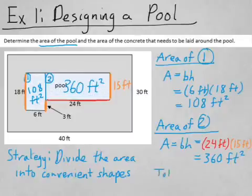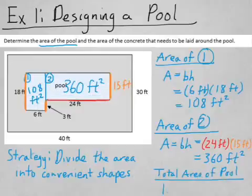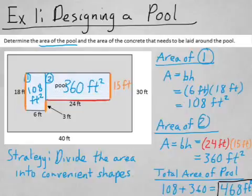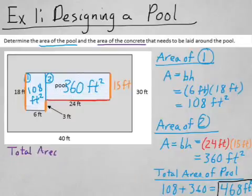So then, to find the area of the pool in total, I would just add the two together, and I'd have 468 square feet. Again, make sure you remember to put your units. If you don't put units, it could be like 468 elephants or something. So we found the area of the pool. Let's find the area of the concrete now.